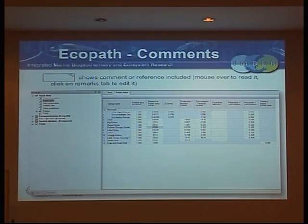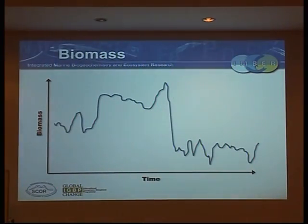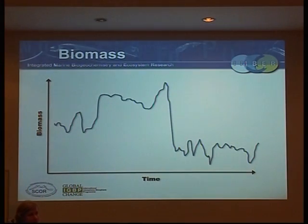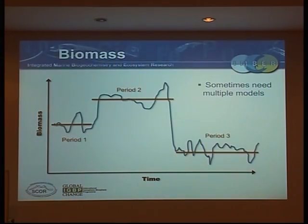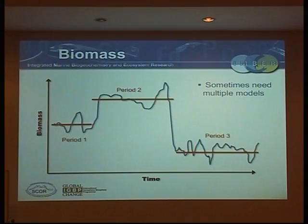You also have to be careful about how you define the time period. Because it's a mass balance model, you won't always have data for one period of time, but you shouldn't try to over-stuff it. If you've got a biomass time series from a trawl survey that looks like this, you should actually have three separate models — one for this period, one for that period, and one for that period — at least for EcoPath. You can try and join them by running through time with EcoSim, which we'll talk about in a minute.